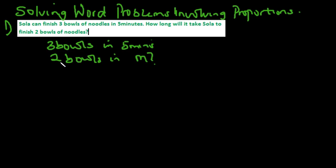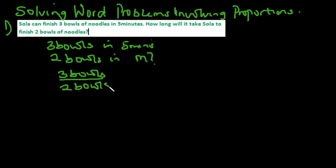The trick is to create a ratio, ensuring that the values with the same units are on each side. So we have three bowls over two bowls equals five minutes over m, since m is in minutes and that's what we are looking for.